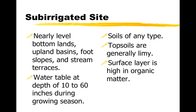The sub-irrigated site is the next one. It'll look very similar to the wetland site and usually won't be flooded. The water table is usually at least 10 inches down and down to 60 inches, or 5 feet, during the growing season. Soils can be of any type. The topsoils usually have a lot of lime in them and will also be high in organic matter. This one isn't as wet year-round as the wetland site — that's what makes it different, so it'll grow different plants.